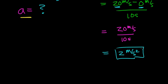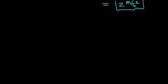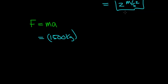So 2 m per second squared is the acceleration of the car. Now we know all the information we need to figure out how much force is required to speed up this car. We can apply Newton's second law of motion, which says that the sum of all forces acting on an object equals the mass times the acceleration. The mass is 1,500 kilograms and the acceleration is 2 m per second squared.